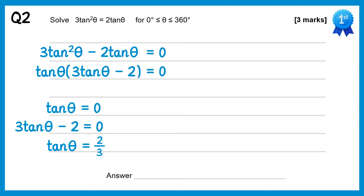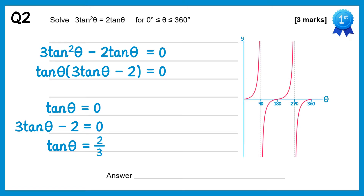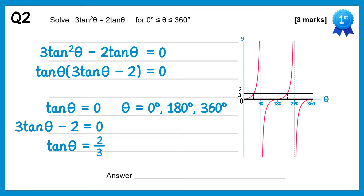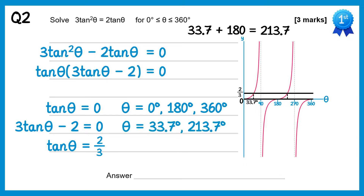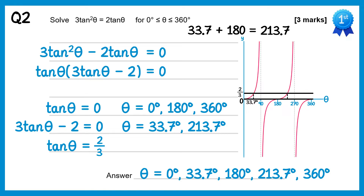Let's draw the graph of y equals tanθ. Starting with tanθ equals 0, a horizontal line at 0 — you can see there are three solutions: 0, 180 and 360. We'll also draw a horizontal line at 2/3, and there are two solutions. Inverse tan of 2/3 gives the first one: 33.7 degrees. To get the other, add 180, giving 213.7 degrees. Altogether we have five solutions: 0, 33.7, 180, 213.7 and 360 degrees.